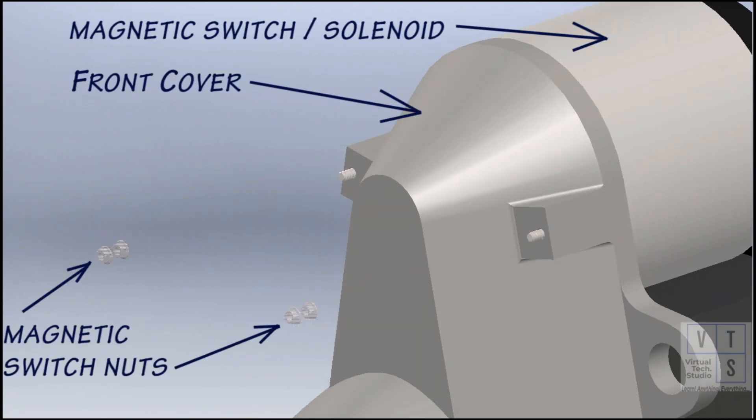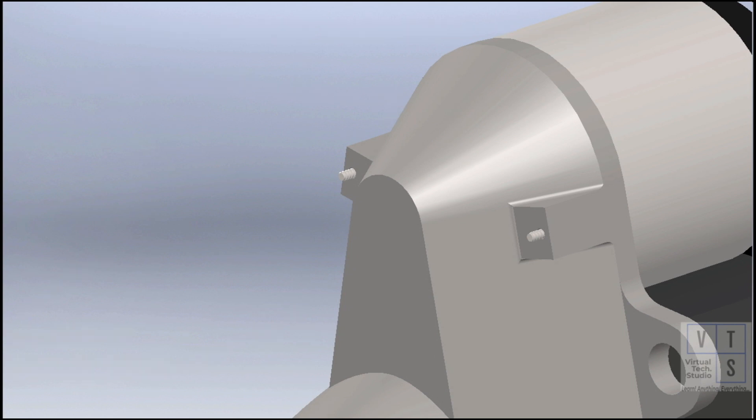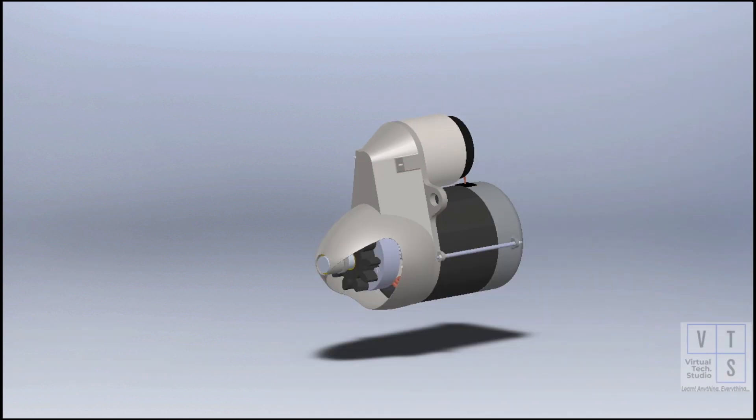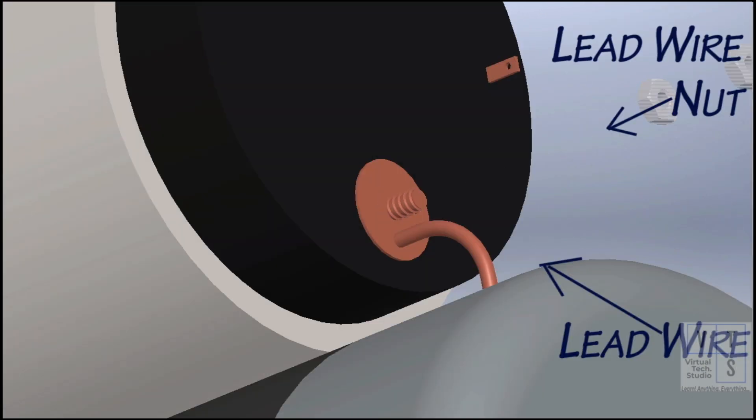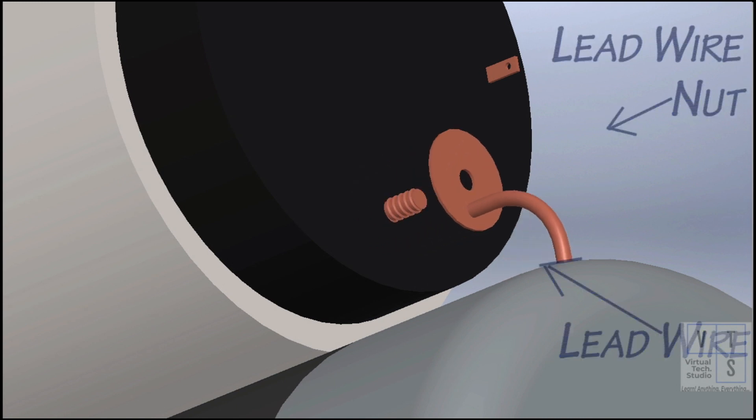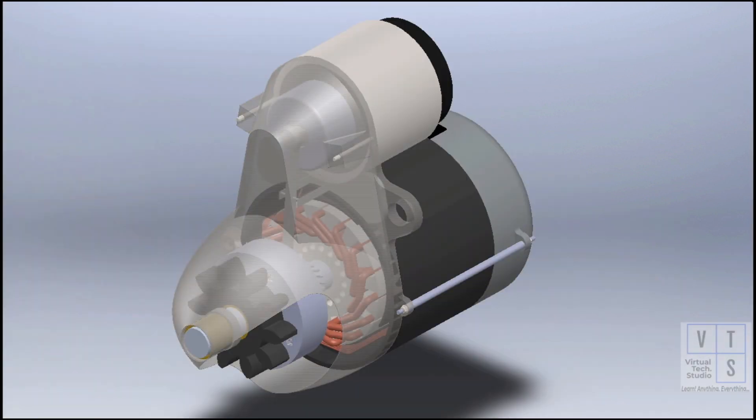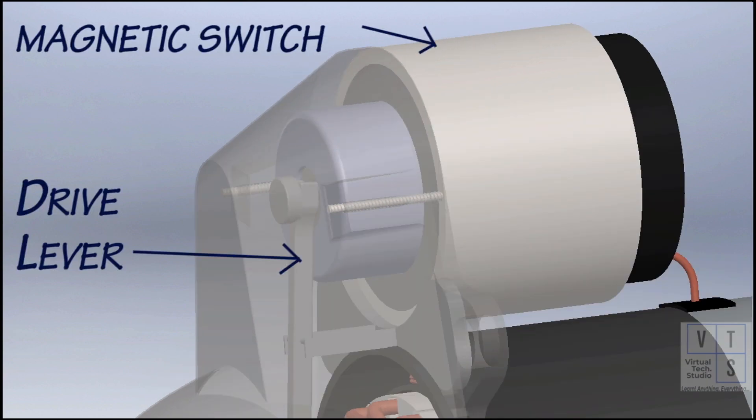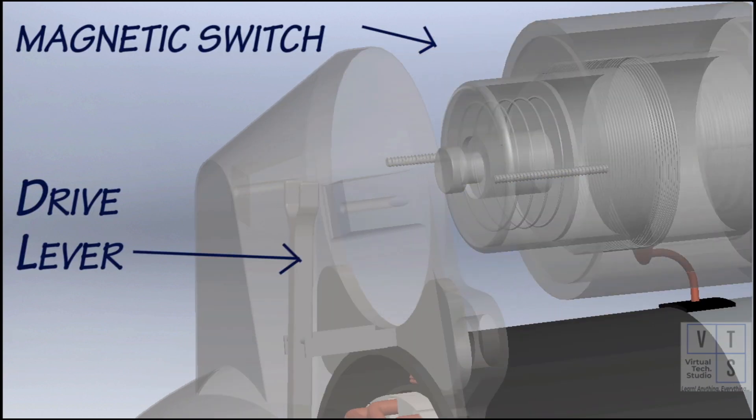Remove two nuts of magnetic switch. Remove the lead wire nut from the magnetic switch and disconnect the lead wire. Then take out the magnetic switch, such that the inside hook is disconnected from the drive lever.